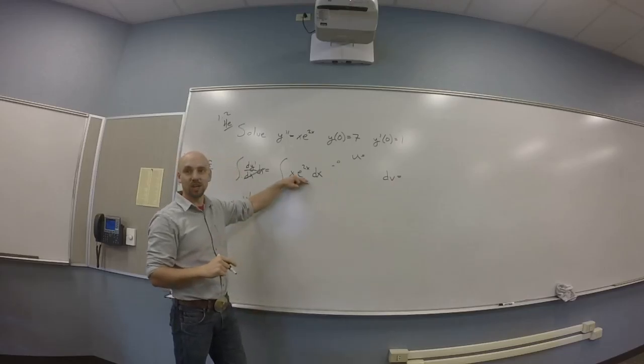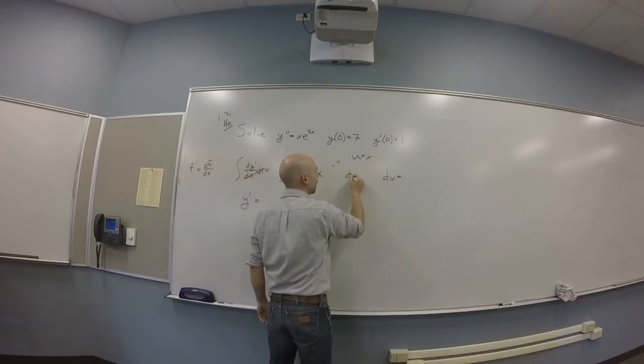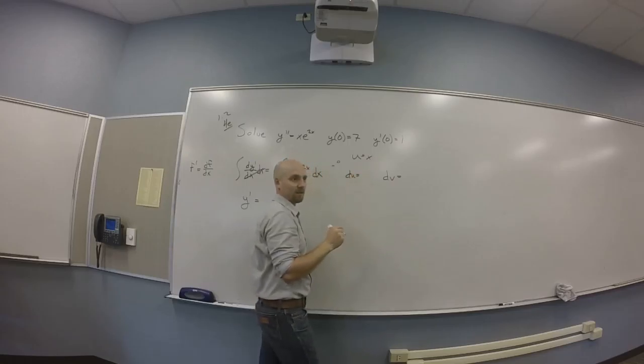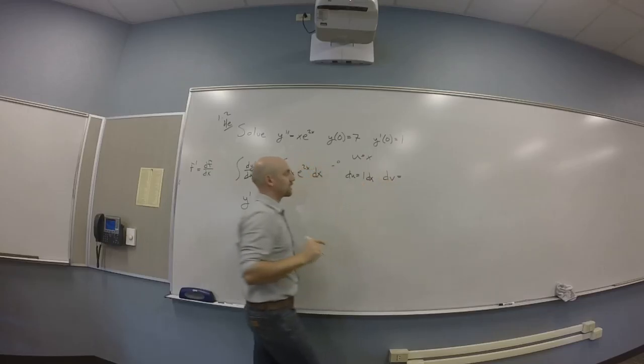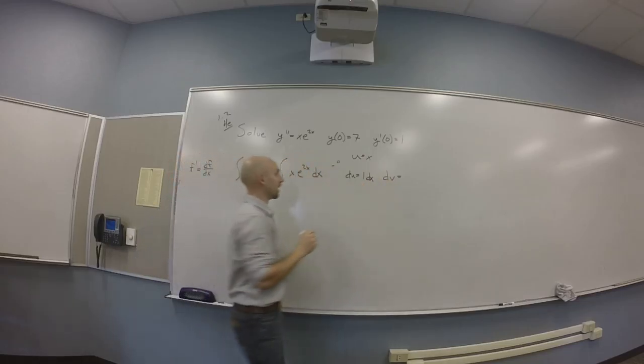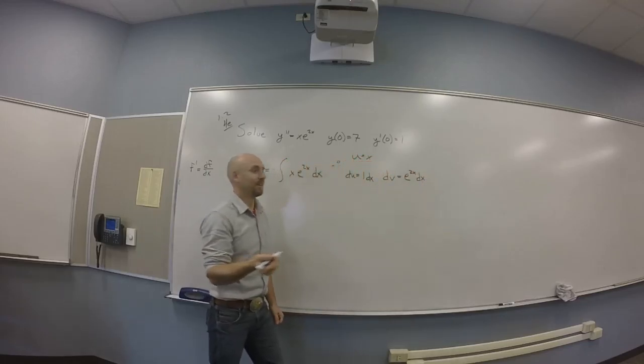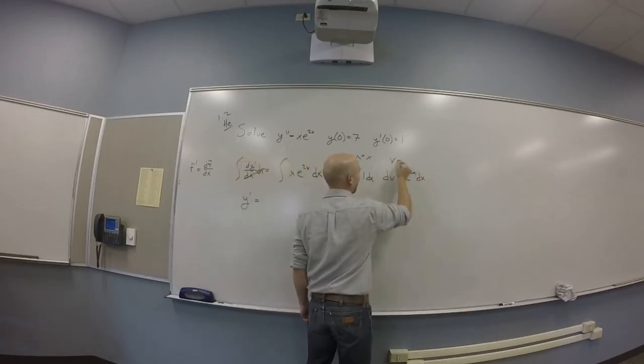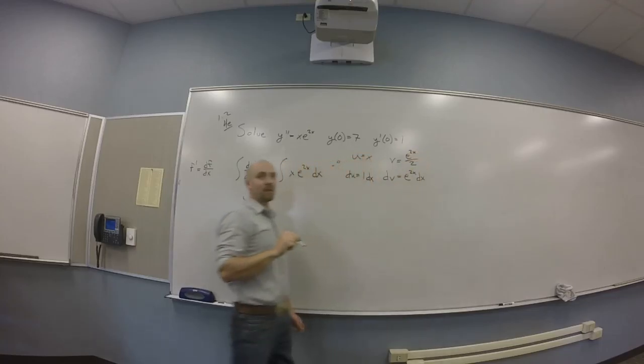And the stupid trick is these guys cancel, and this thing eats the d. So you get y prime on this thing. Or you can reason your way through the chain rule. Like, which is what's really going on, right? You're really using the chain rule to say that the anti-derivative of a second derivative should be the first derivative. Done. On this side, what do you get? How do you integrate that thing? Parts. Parts? Okay.